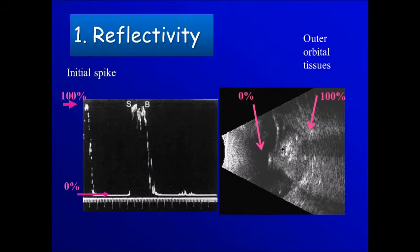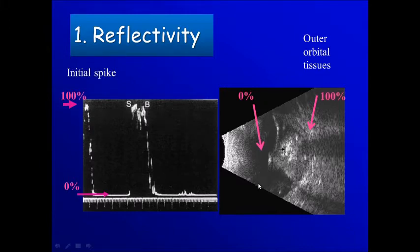Reflectivity of a mass is something between 0% up to 100%. For the A-scan, 0% is that of the vitreous, while 100% is that of the initial spike. In the B-scan, 0% is that of the vitreous, while 100% is that of the outer orbital tissue.